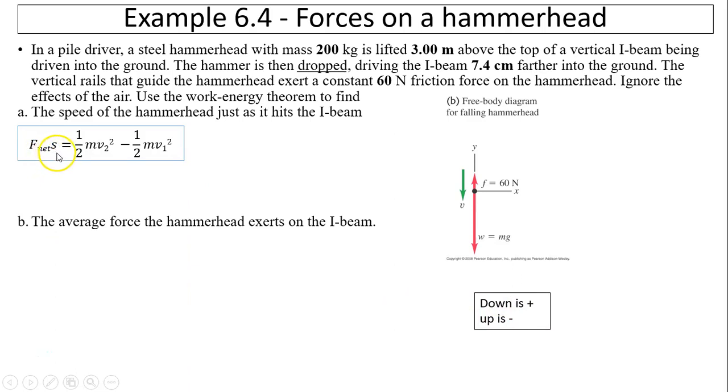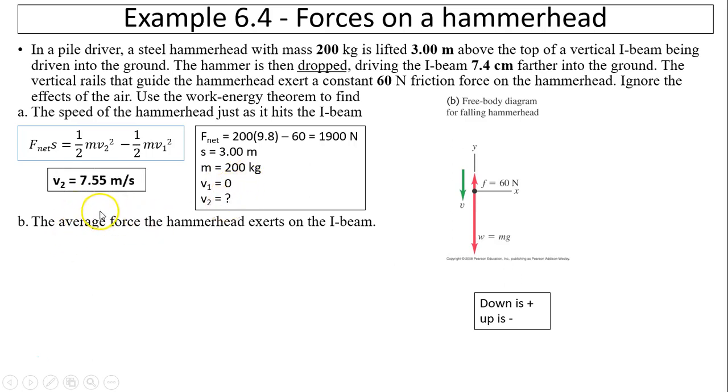So it's displacement and V, V is also positive. Because the hammerhead is dropped, V1 equals 0. So we can use, this is the given, net force is the weight minus friction force. The displacement is positive 3. Here's m, V1 equals 0. I can solve for V2 equals 7.55 meters per second.